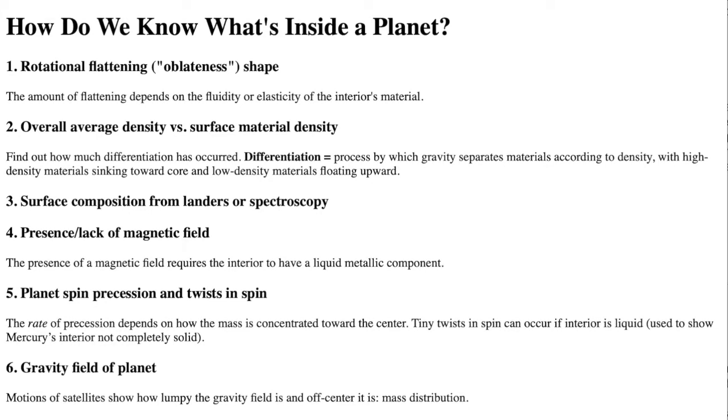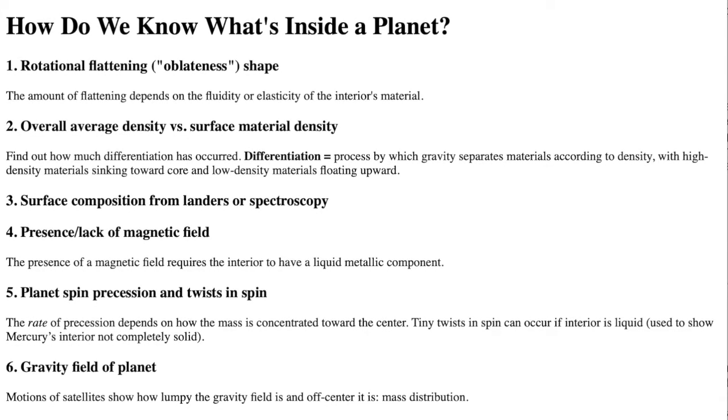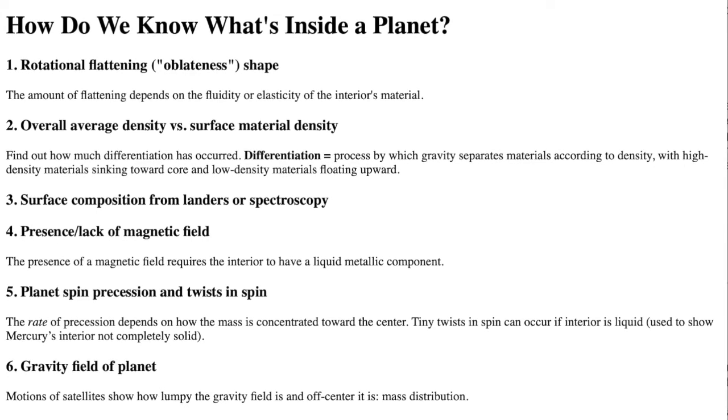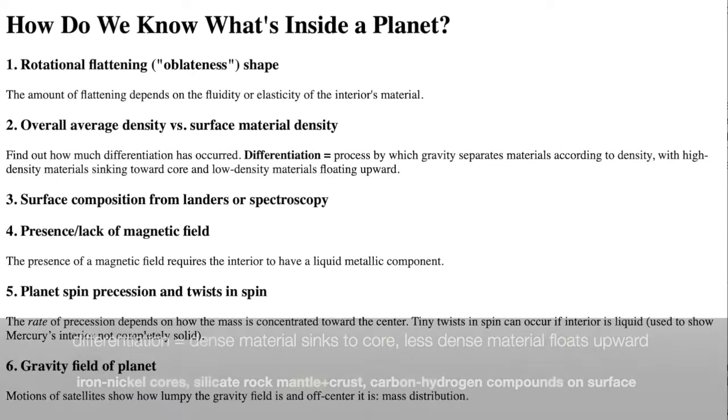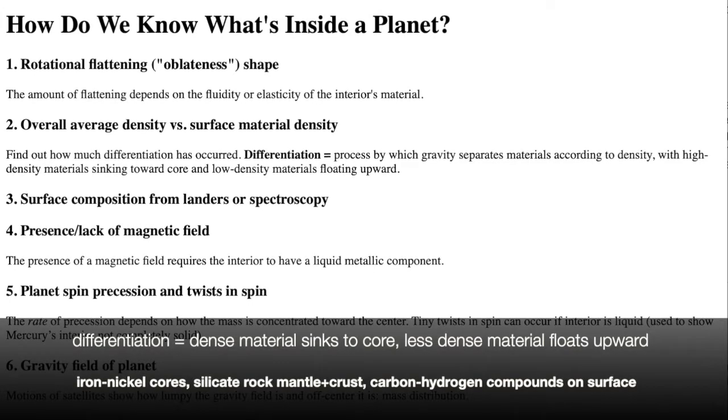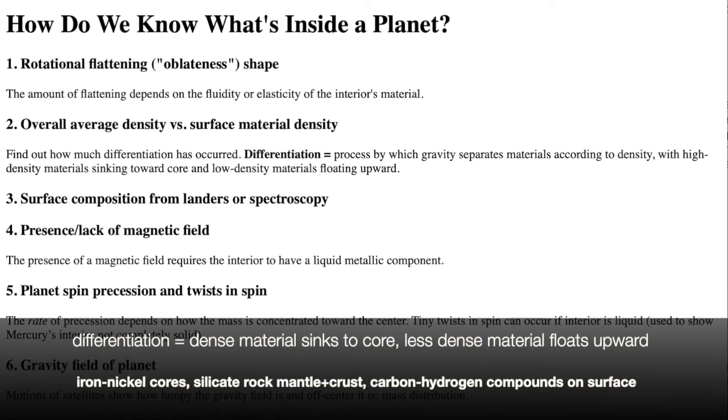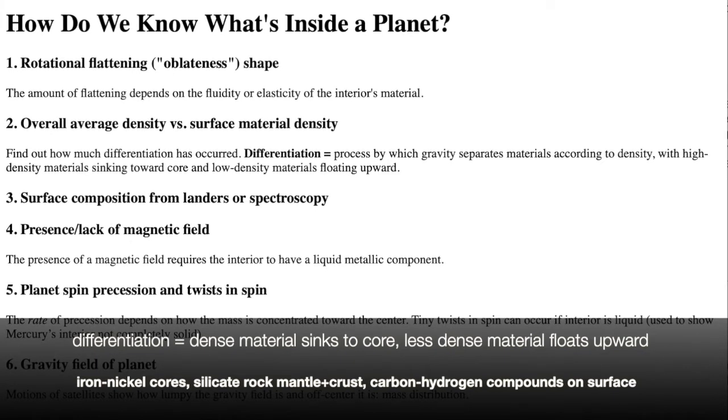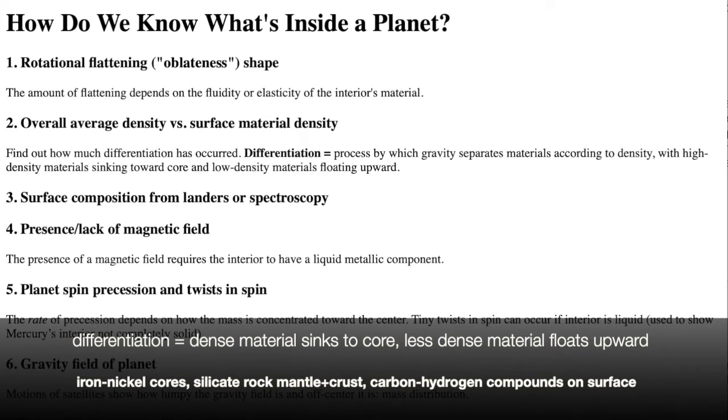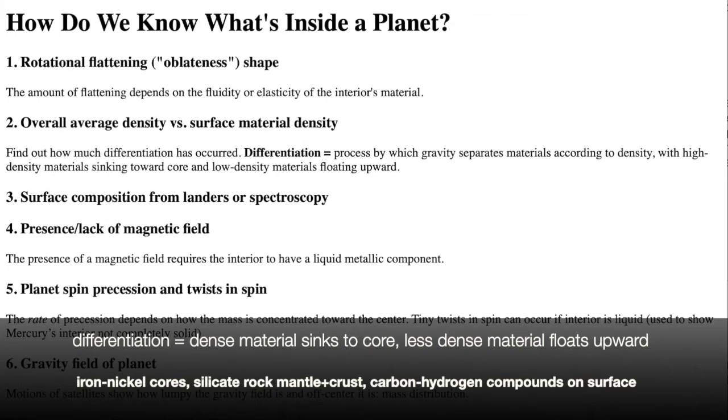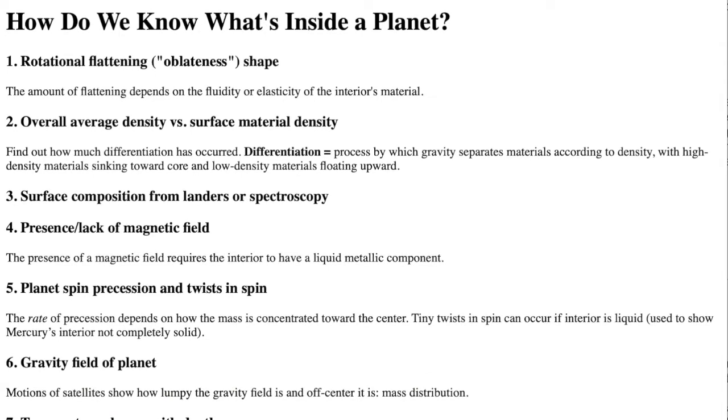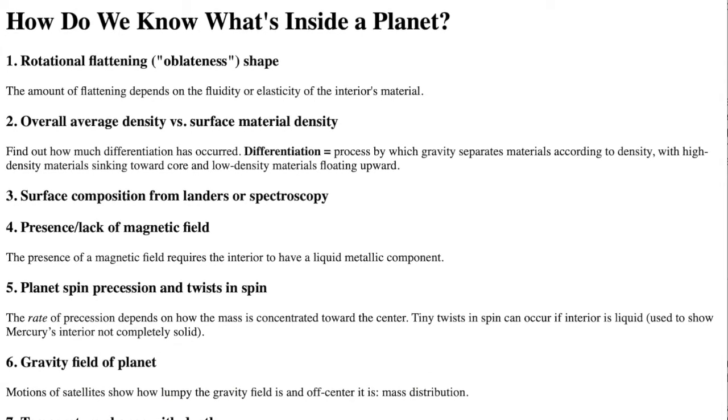If you compare the overall total average density of the planet as a whole with the density of the surface material, you can find out how much differentiation has occurred. Differentiation is the process by which gravity separates materials according to density, with the high density materials like iron and nickel sinking toward the core, and low density materials like silicate rock and carbon compounds floating upward.